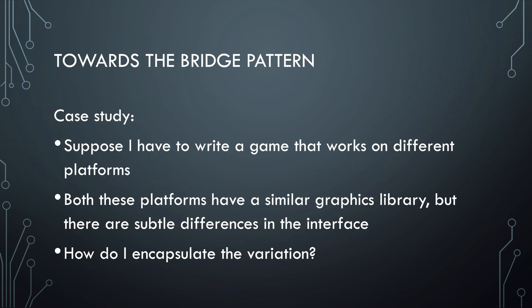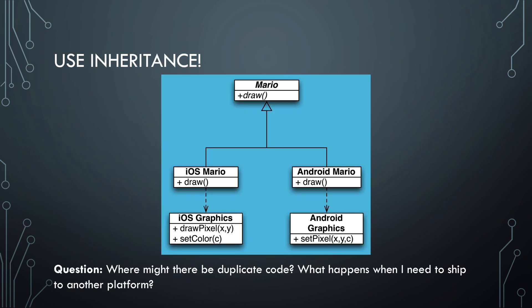Let's look at an example of how this works. Suppose we're developing a game that has to work on different platforms — Android, iOS, etc. Each platform has their own graphics engine, but they have subtle differences in the interface. How do you encapsulate this variation? We use an abstract class with inheritance. Say we want to draw a Mario character. So we make an abstract class Mario, and then we create an iOS version of Mario that can draw itself on an iOS device, and we create an Android version of Mario that can draw itself on an Android device.